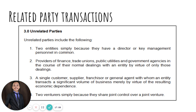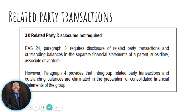If the relationship is only one of economic dependence, it is not required to disclose transactions related to these parties. Also, two venturers simply because they share joint control over a joint venture are also unrelated parties. Those are examples of unrelated parties.